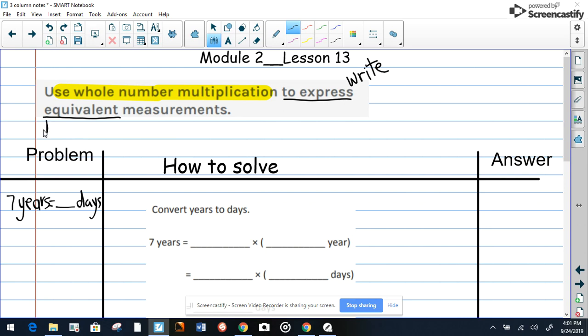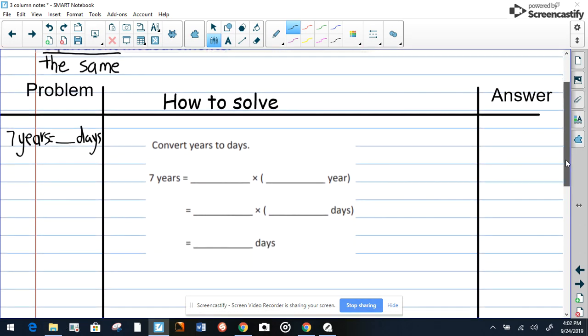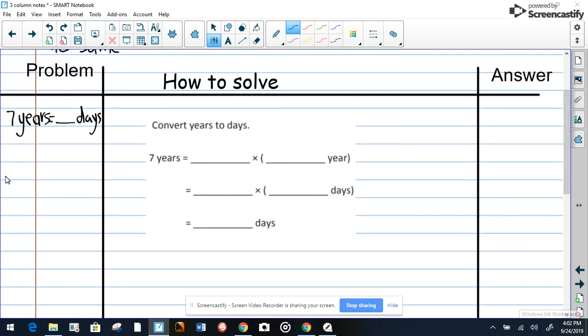Let me show you, my friend. To express means to write equivalent measurements—the same measurements. So now let's look at what they're talking about. Here's the problem. We need to convert. This is called conversions.